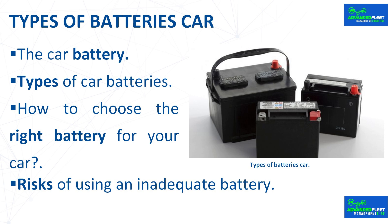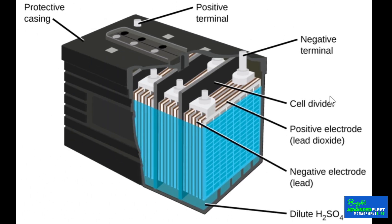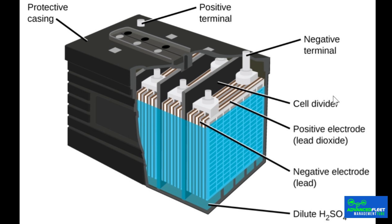Types of car batteries. The different car batteries that you can find in the market are wet cell batteries — lead acid. The wet cell batteries are the most common and generally the most economic. They use lead plates immersed in sulfuric acid which requires little maintenance.